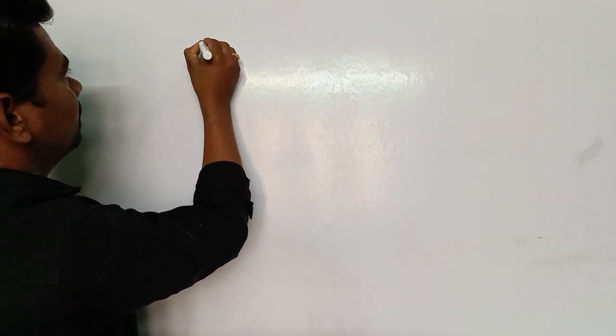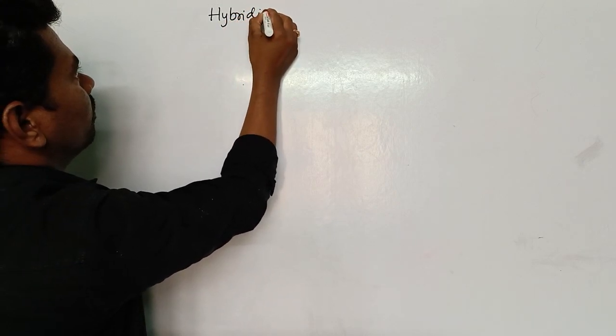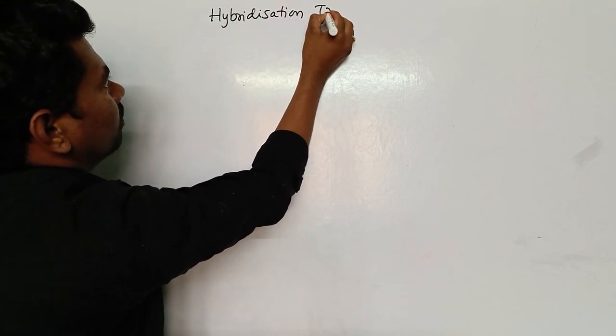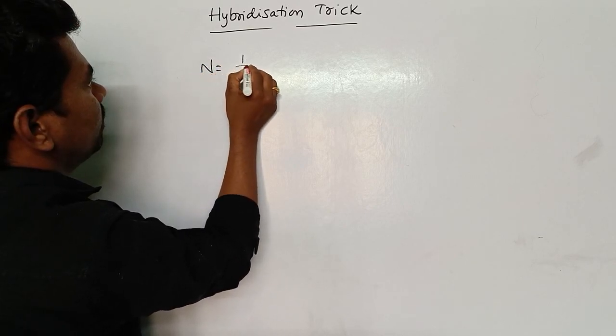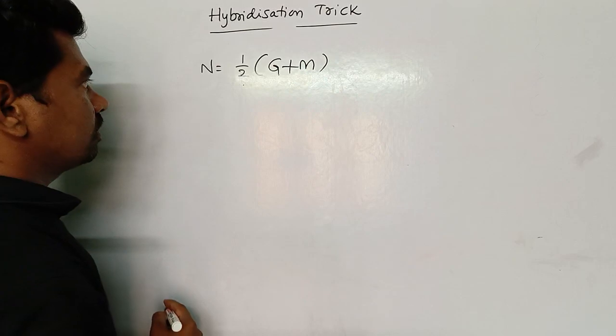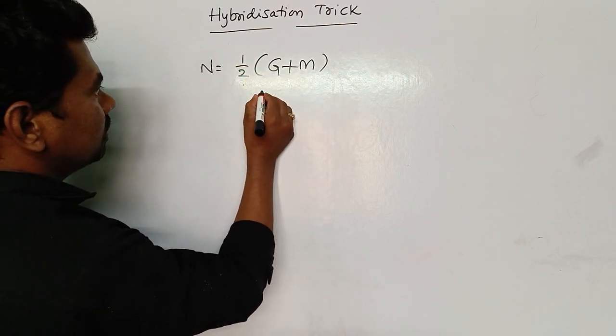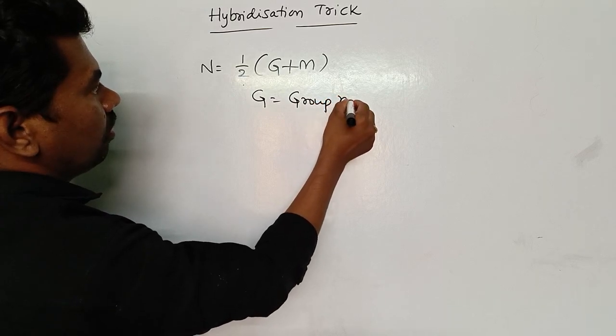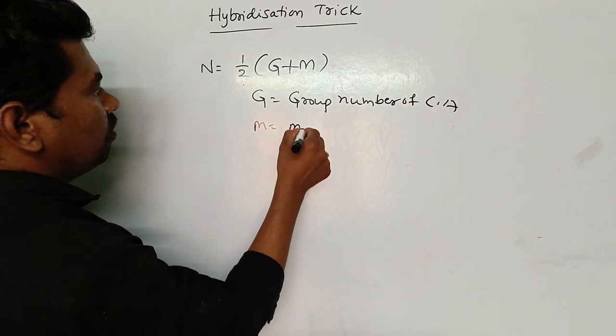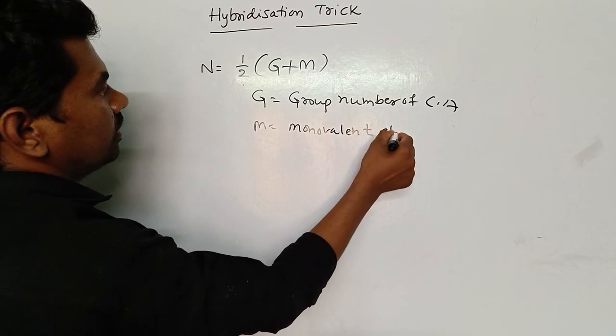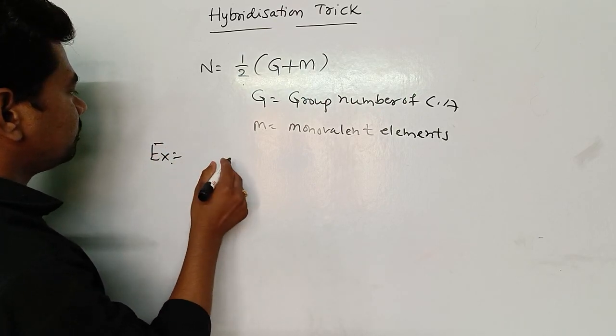For a neutral molecule, N equals one-half times (G plus M). This is the formula you can use to identify hybridization. Here, G means group number of the central atom, where M is the number of monovalent elements.